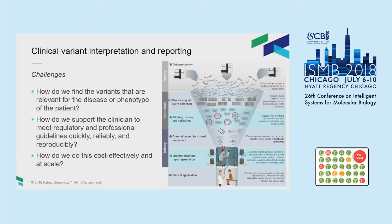In clinical variant interpretation and reporting for diagnostics, there are a number of challenges to overcome when using whole genome sequencing. We use whole genome sequencing because we believe it will achieve higher diagnostic rates. Nevertheless, we have too many variants to begin with. The challenge is how do we find the variants relevant to the disease or phenotype of the patient quickly? How do we optimize clinician time to make a classification and issue a report in a reproducible and cost-effective way — clinician time costs a lot of money — and importantly, how to do this at scale with large numbers of patients.